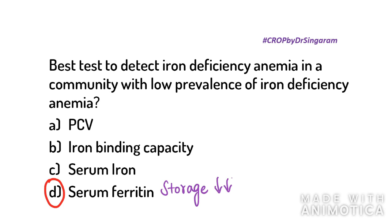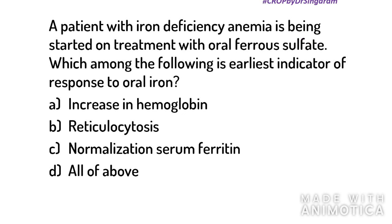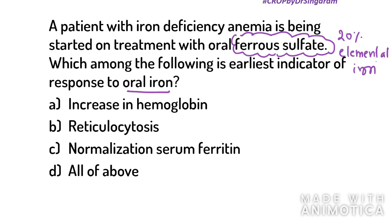When a patient with iron deficiency anemia is started on treatment, the preferred form is oral ferrous sulfate. Ferrous sulfate contains 20% elemental iron and is the most economical and effective form of oral iron. The question asks: which is the earliest indicator of response to oral iron therapy? Please remember that ferrous sulfate is always the preferred formulation for oral supplementation.